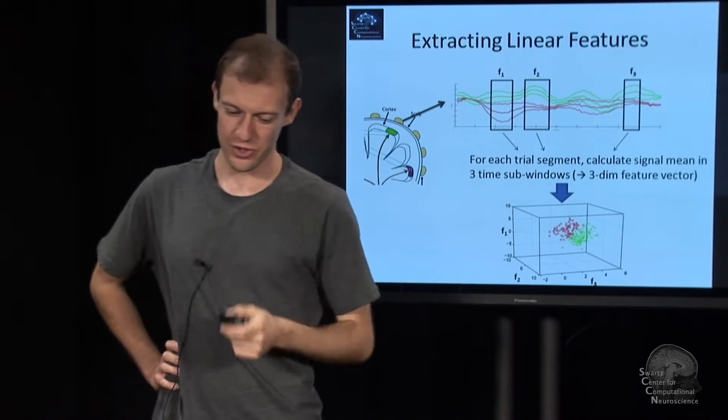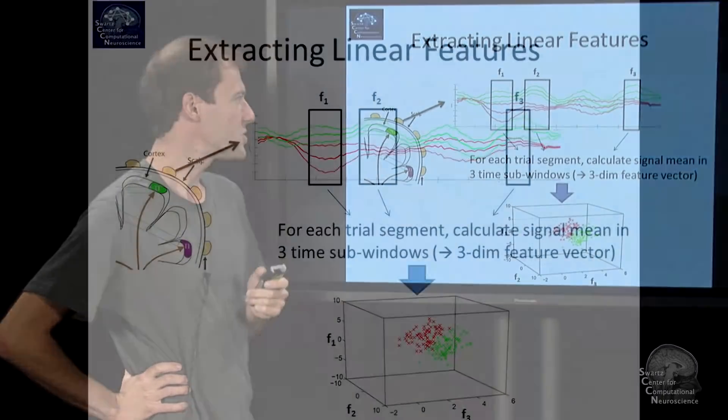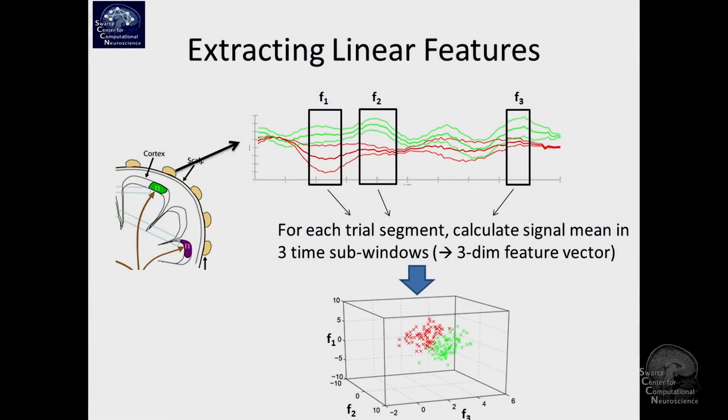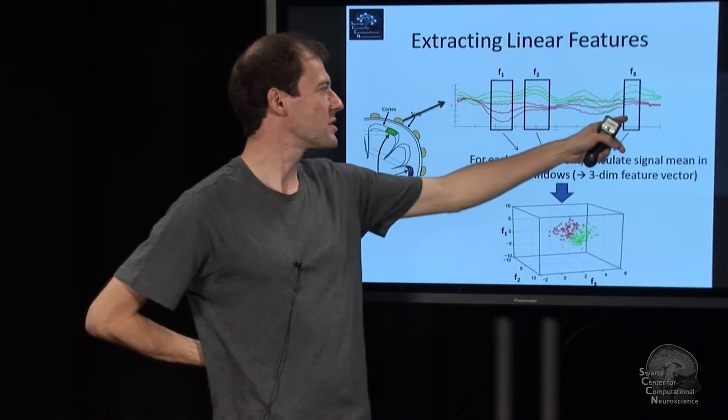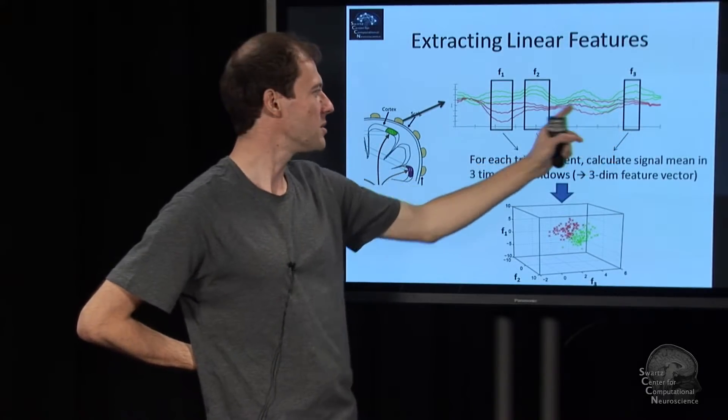We continue to extract features, but this time we're using features that are linear in the data. The features are just averages in certain time ranges. We say this time range is interesting, informative, we average data in here, integrate information. We do this for this time range and we think this time range here is also interesting, probably independent of the others.